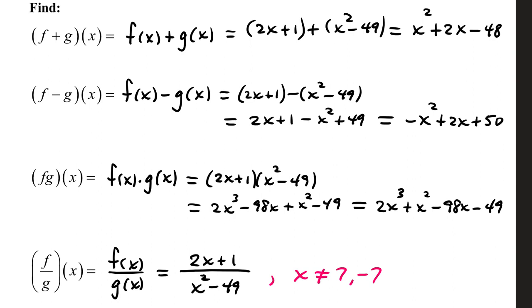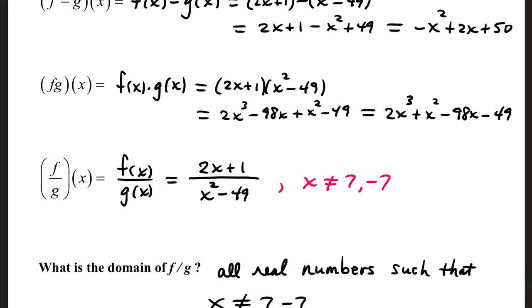x squared minus 49. And now, there are actually no like terms to combine. Every term has a different exponent. I like to start at the top: 2x cubed plus x squared minus 98x minus 49. It gives it a cleaner look if you write them in descending order. Again, there were no like terms to combine, but we just rearranged them.